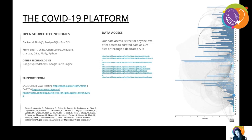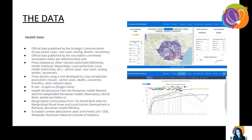All data is open for access. We distribute it through CSVs and whoever wants to integrate it also has a dedicated API for each dataset. All the health data we collect from authorities includes active cases, new cases, testing, deaths, recoveries, vaccines, and so on.